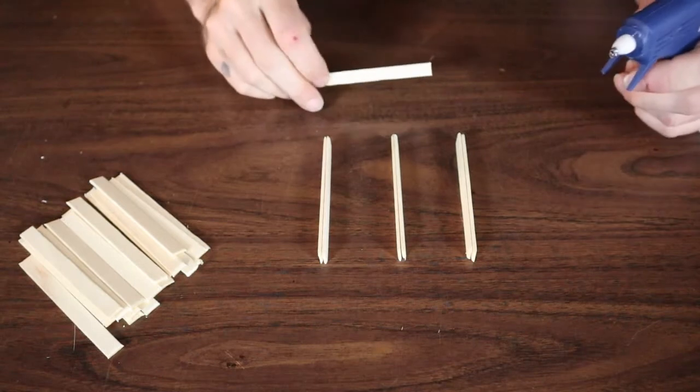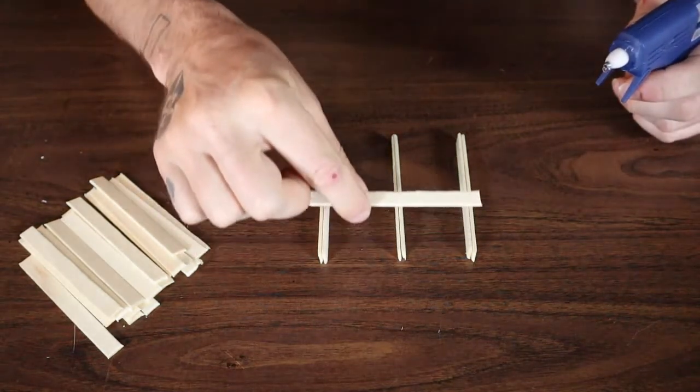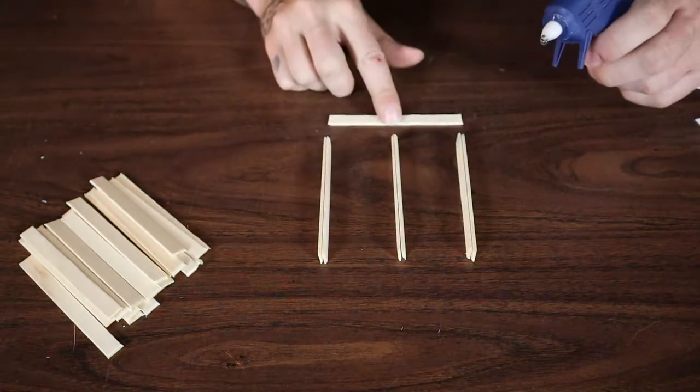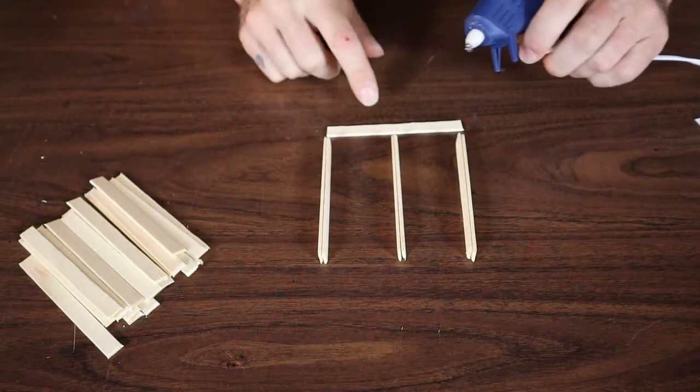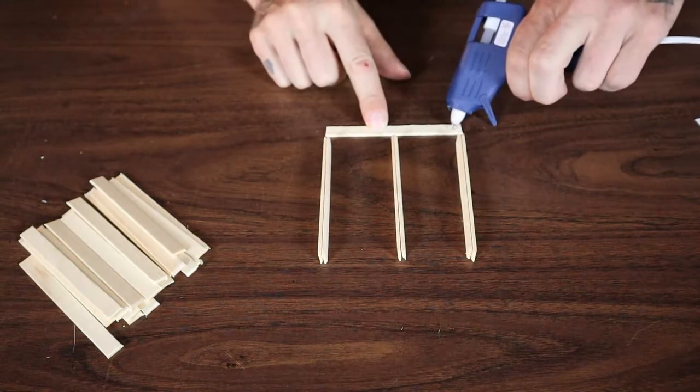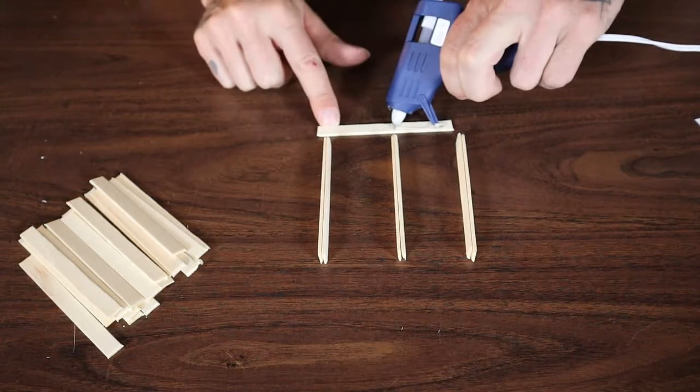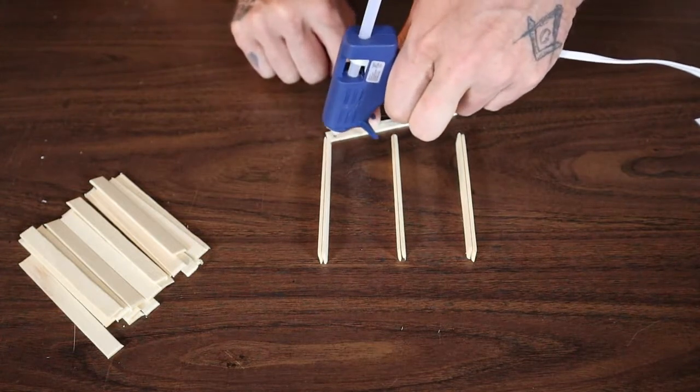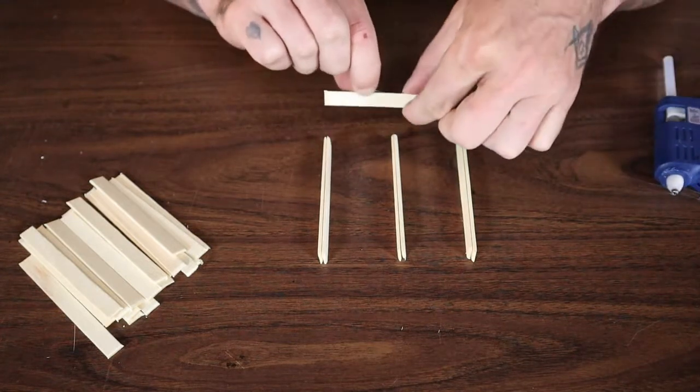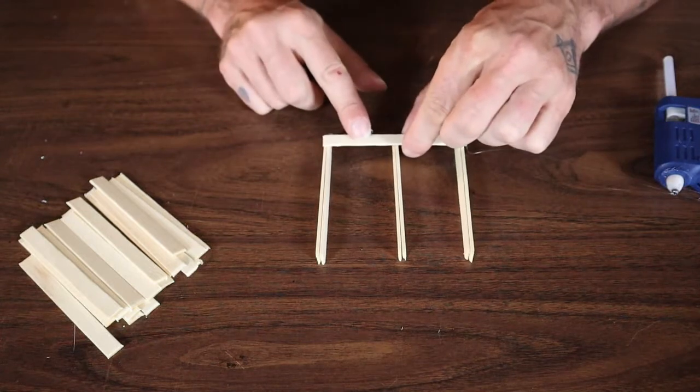Now that you've got your three runners, you're going to want to put your bottom sticks on. You can just get your runners kind of lined up nice and square or close to square. Put a little bit of hot glue in your center and your ends here of this piece and then carefully place that on top.